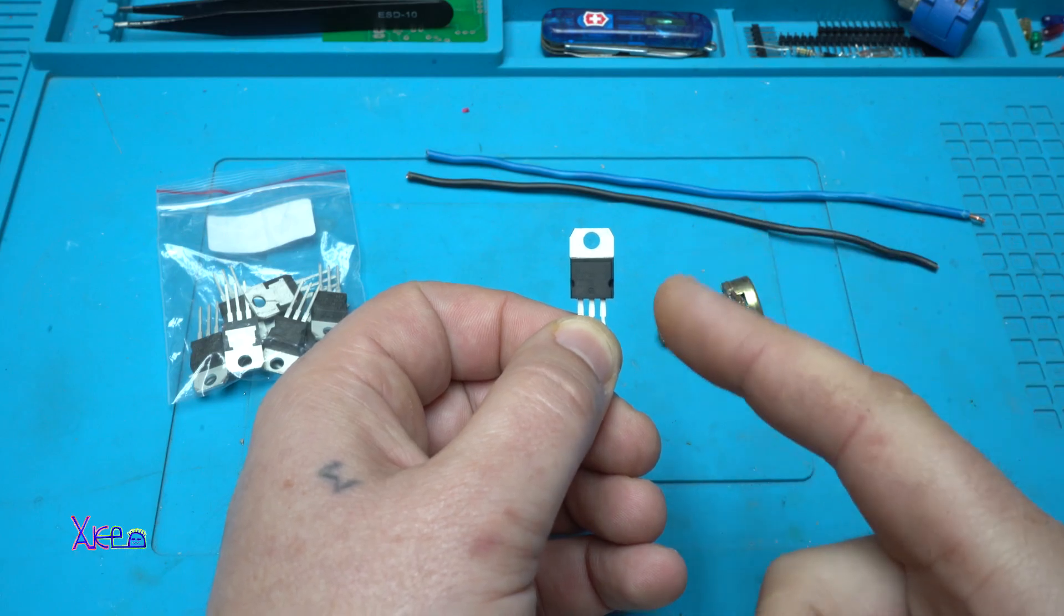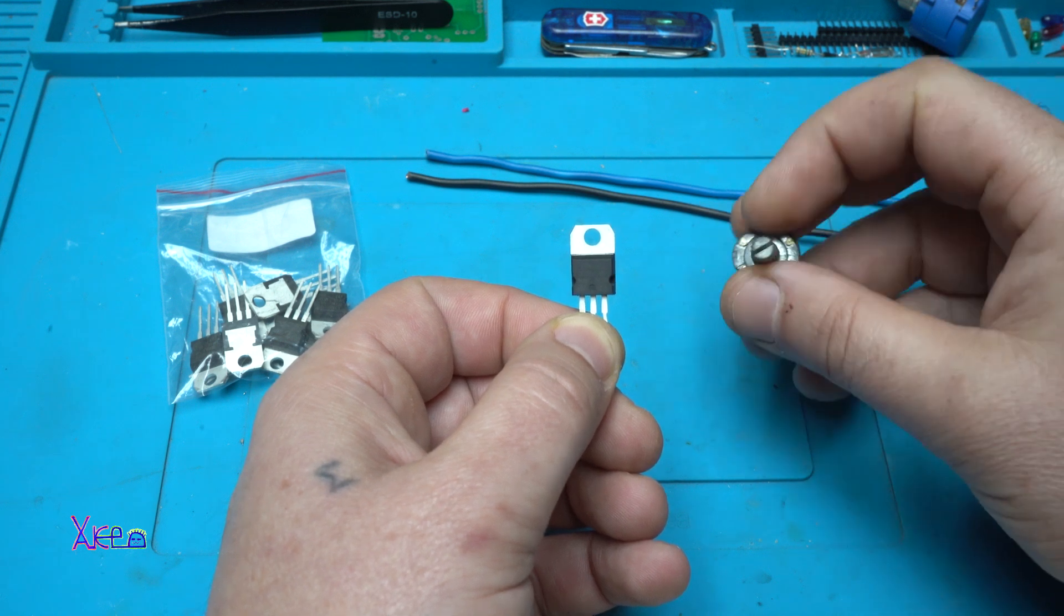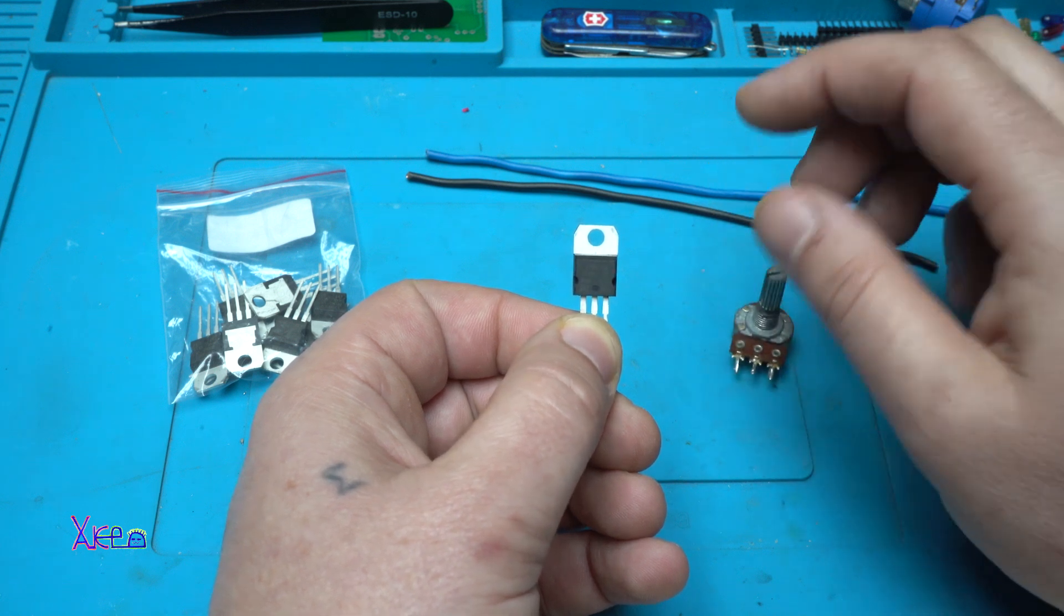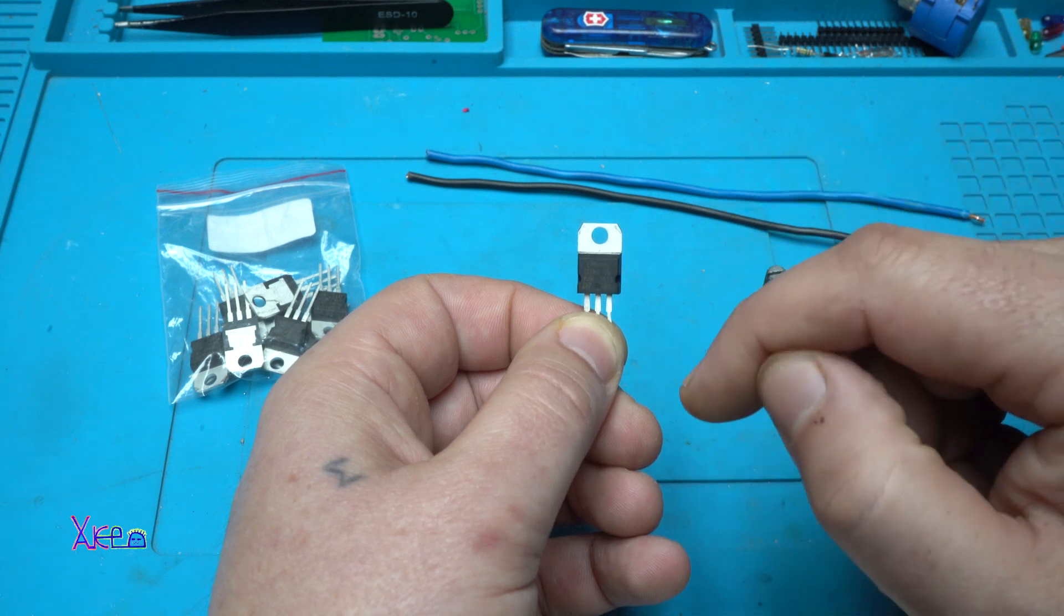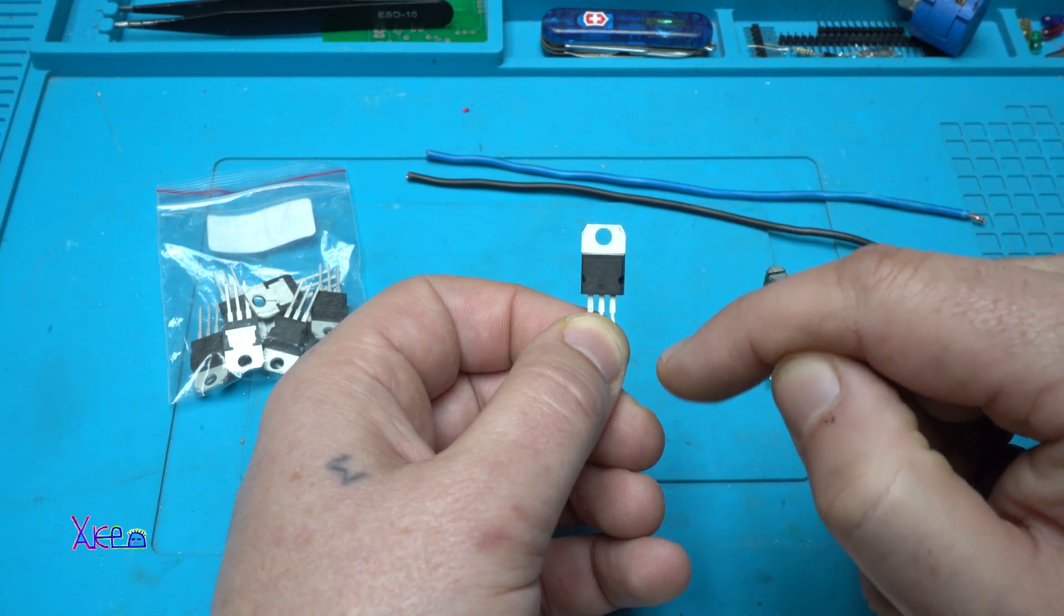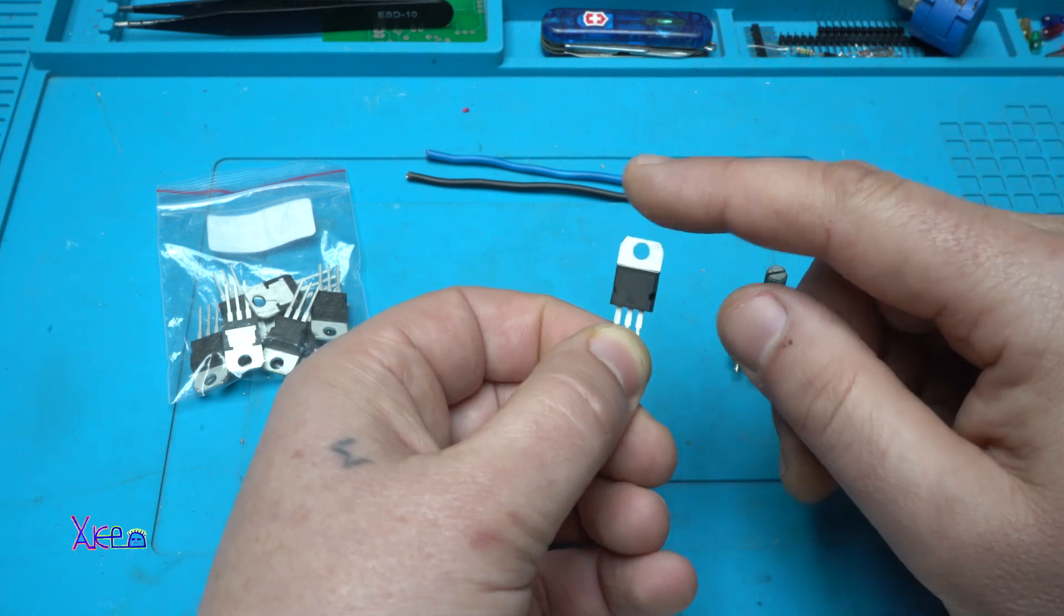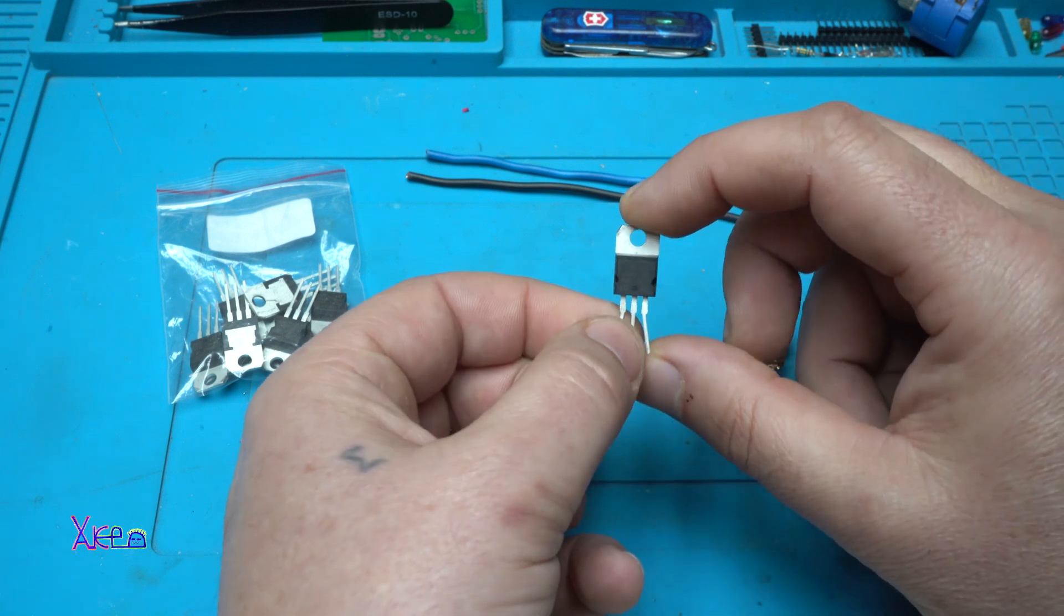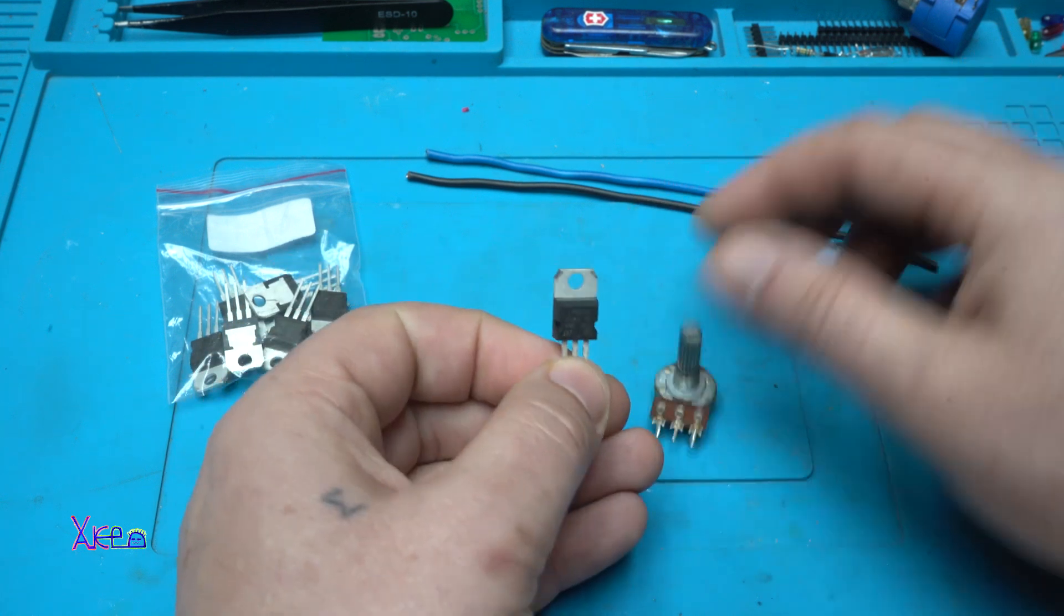Using only the voltage regulator and a potentiometer, you can use a 20K or 50K potentiometer. Here you can make an adjustable voltage regulator using this 7805 that normally gives only 5 volts, but I'm going to show you a trick, a circuit that you can use. Two parts and some wires.